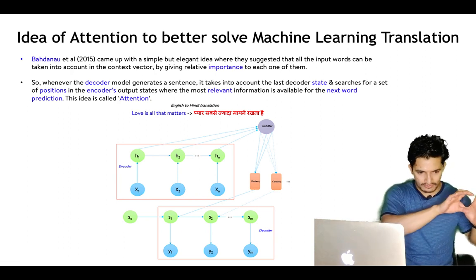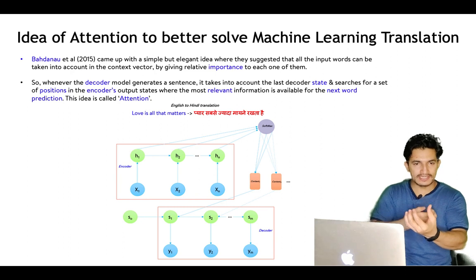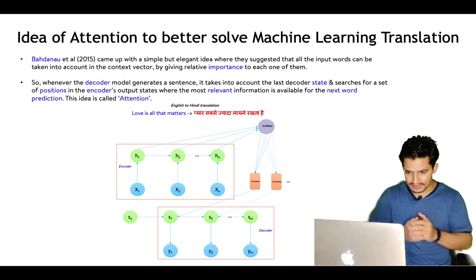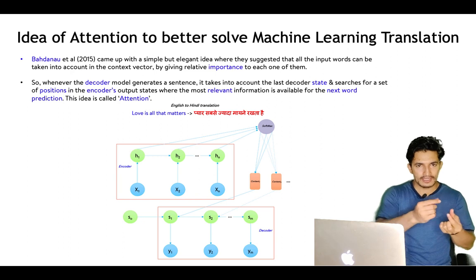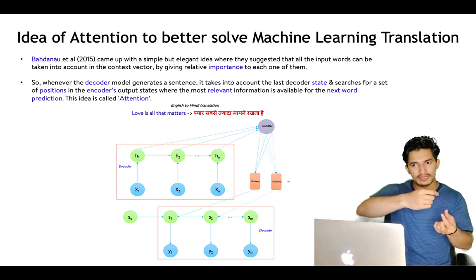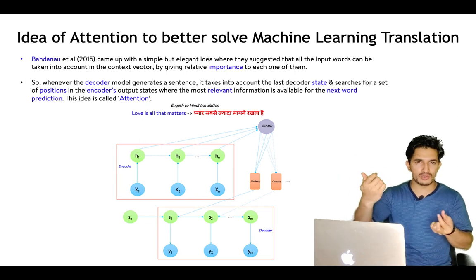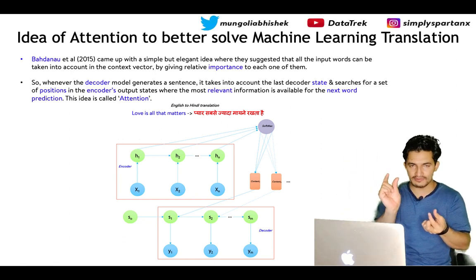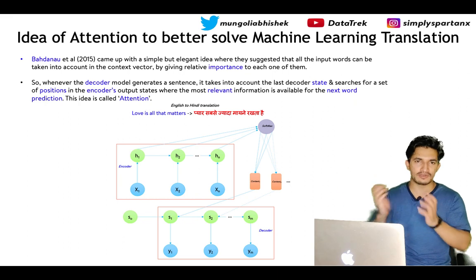Previously, the encoder would generate one context vector passed to all decoder steps. But with the attention mechanism, every time we generate a decoded word, we compute a weighted sum over all encoder hidden states. This weighted sum produces a new context vector for each decoded word. That context vector, combined with the last hidden state of the decoder, is used to generate the next word. This process repeats for every output word.